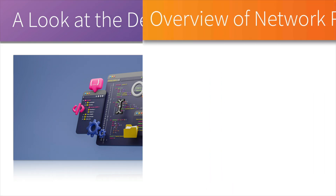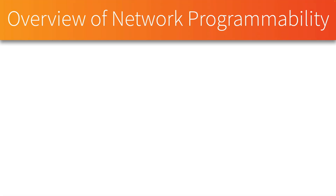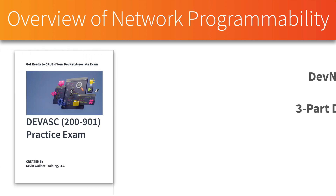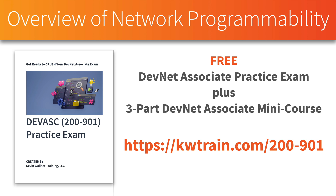Before we get going, I've got a free gift for you. You can download absolutely free our DevNet Associate — that's exam number 200-901 — practice exam. This does not have any braindump questions in it. We're very anti-braindump here at KWTrain. All the questions were written by the KWTrain instructors. If you'd like to download your free PDF with over 100 questions and very detailed explanations, just go to kwtrain.com/200-901. That's also going to give you our three-part DevNet Associate mini course. The video you're watching right now on YouTube is part one of that three-part series, but if you want to see the other two parts, you need to get signed up. It's totally free.